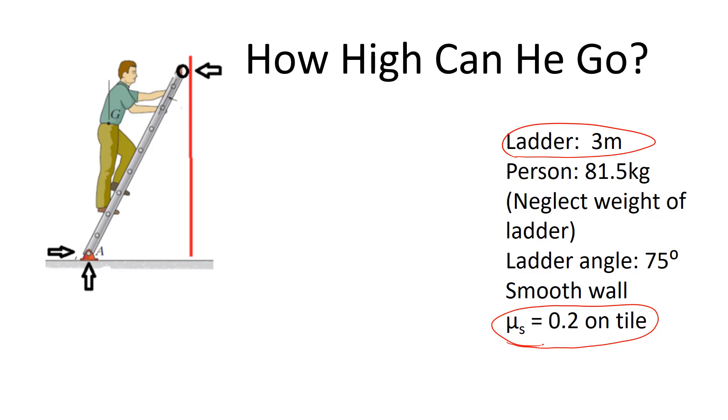That's our impending motion keyword thought process. How high can you go? What's the limit? What's the maximum? Where's the edge? So that's what makes this an impending motion problem. As in the last example, the person has a mass of 81 and a half kilograms. We're neglecting the weight of the ladder for convenience. Ladder angle is the recommended 75 degrees. Smooth wall, again, that's one of our keywords. That implies no friction.